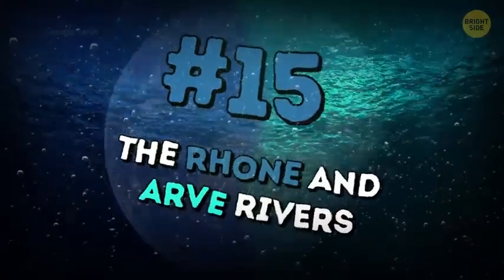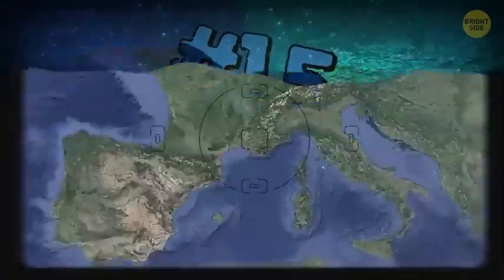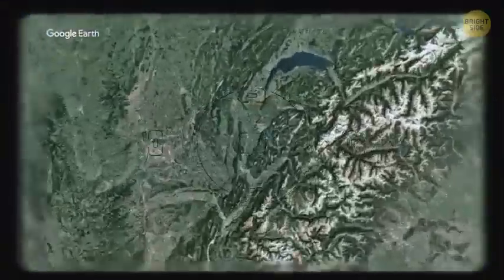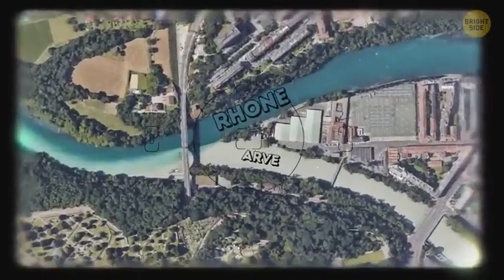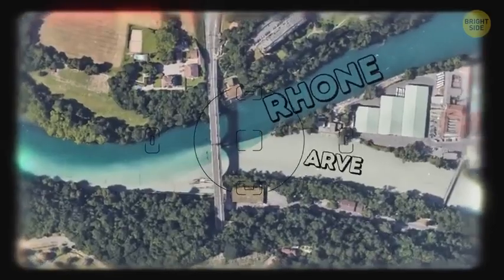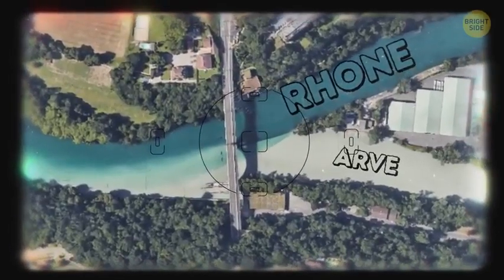The Rhone and Arve Rivers. They flow into each other in Geneva, Switzerland. The Rhone is a pure river that flows out of the lake of Geneva. The Arve is cloudy as it gets its water from the glaciers of the Chamonix Valley.